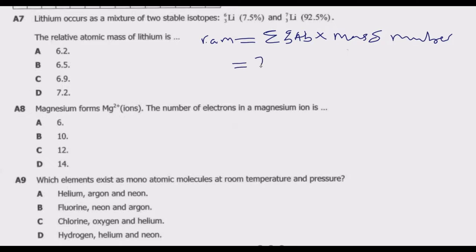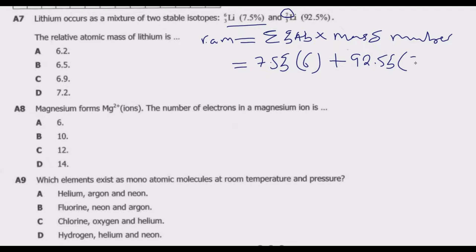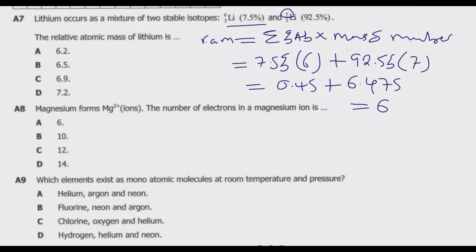We know that 7.5% of lithium exists as lithium-6, and 92.5% exists as lithium-7 with mass number 7. So we calculate: (7.5% × 6) + (92.5% × 7). That gives us 0.45 plus 6.475, which when added gives 6.925.